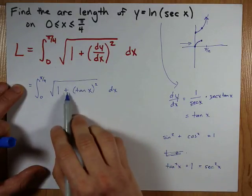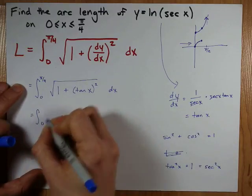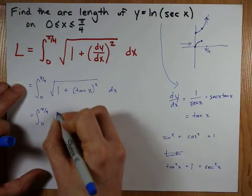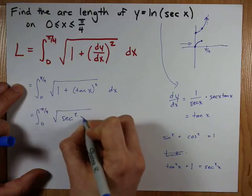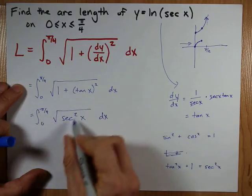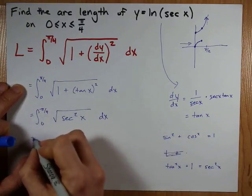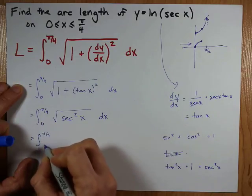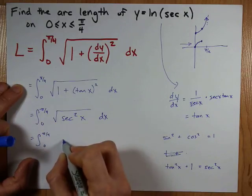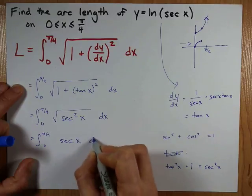Tan squared plus 1 is sec squared. So, I can just go the square root of secant squared of x here. And now, I'm taking the square root of a perfect square. Which gives me the definite integral from 0 to pi over 4 of just regular secant x dx.